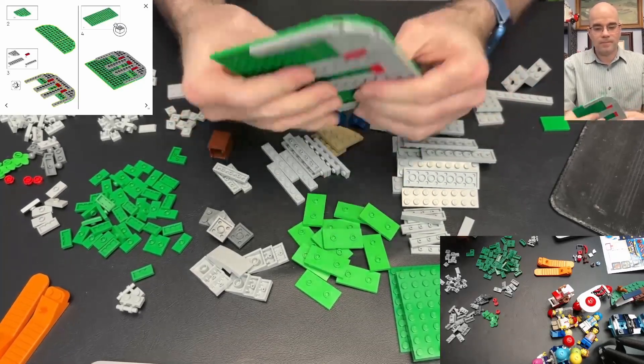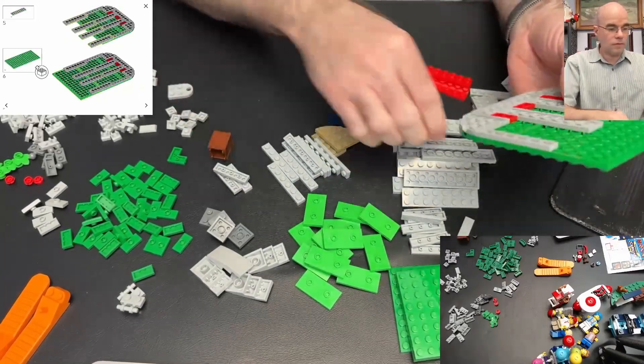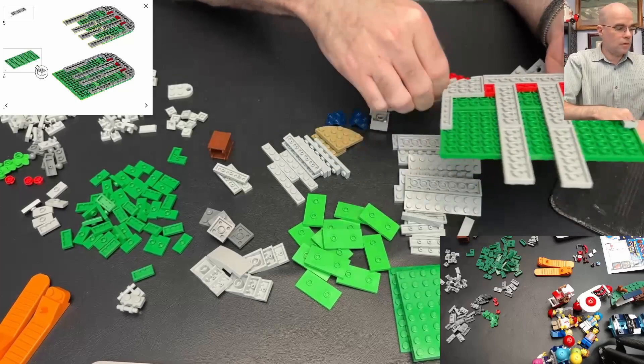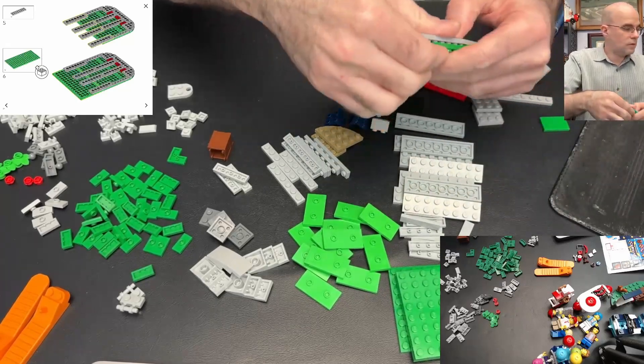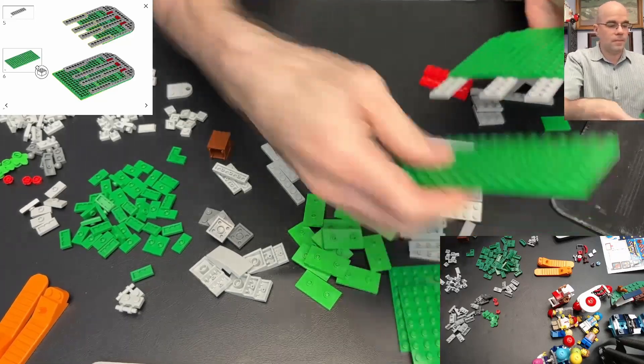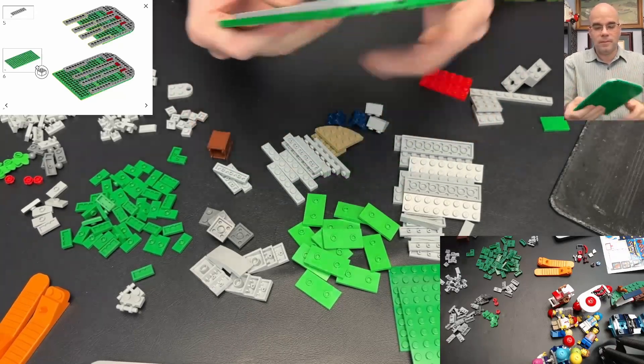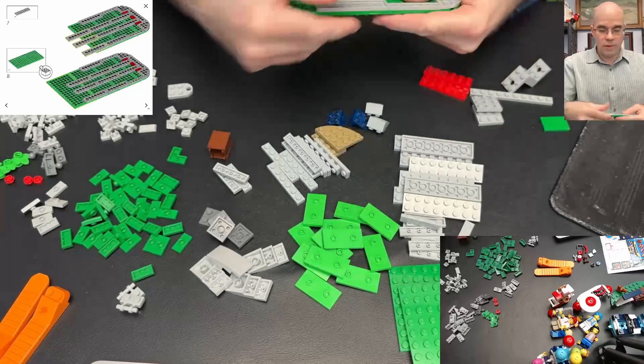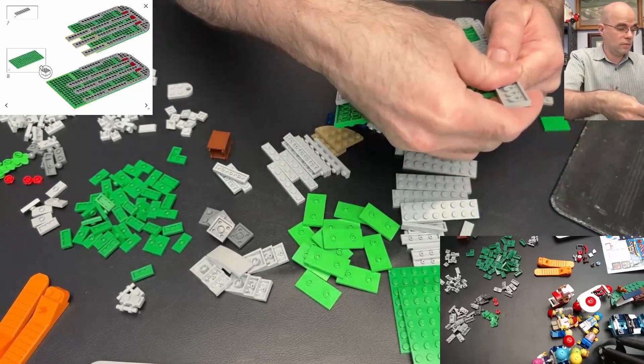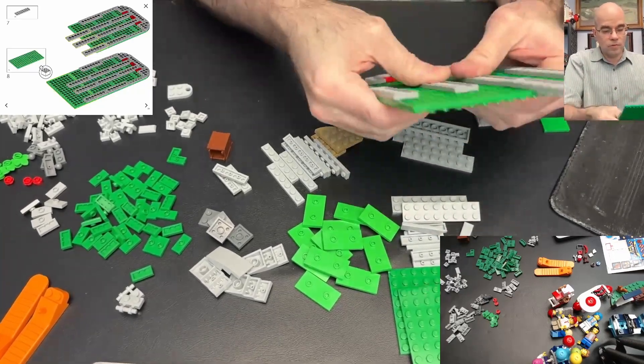I need these big green plates. Now some more of these gray plates. We've got this making a fairly large base here. Adding the green plate, and doing it again except just three pieces on this side.